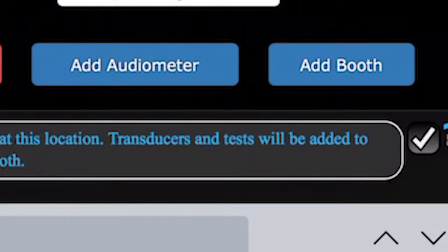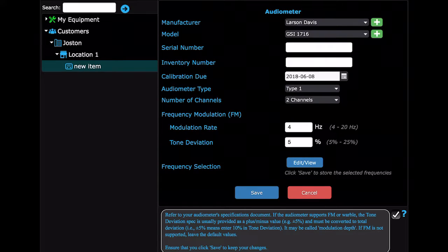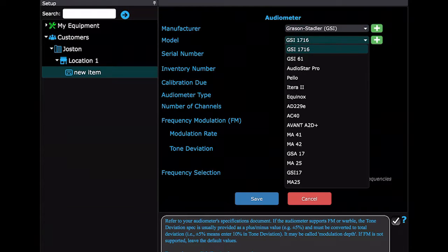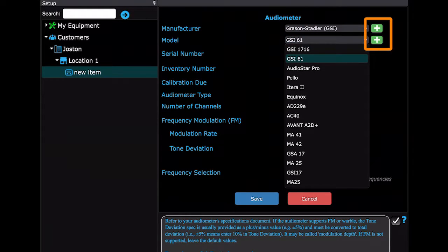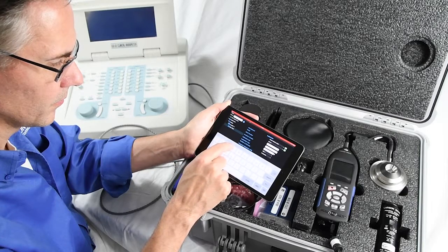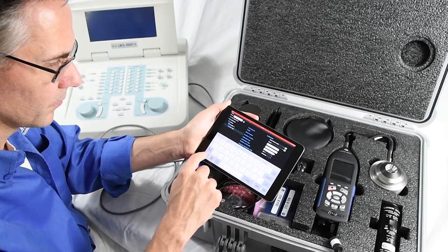Now you can add an audiometer or booth. We're going to add an audiometer. There are dropdowns for the manufacturer and model. If an item is missing from the list, choose the green Add button to the side to add to the list. This information will appear on the report, so ensure all fields are filled out.